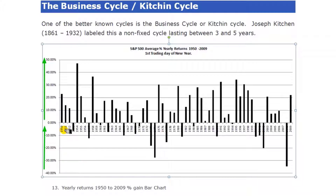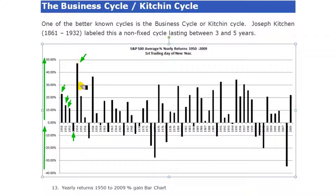For example, in 1950 the S&P made a gain of over 20%, as you can see right here, and made a gain in 1951 and 1952, made a loss in 1953, and then a huge gain in 1954. And on it goes throughout the years all the way to 2009.